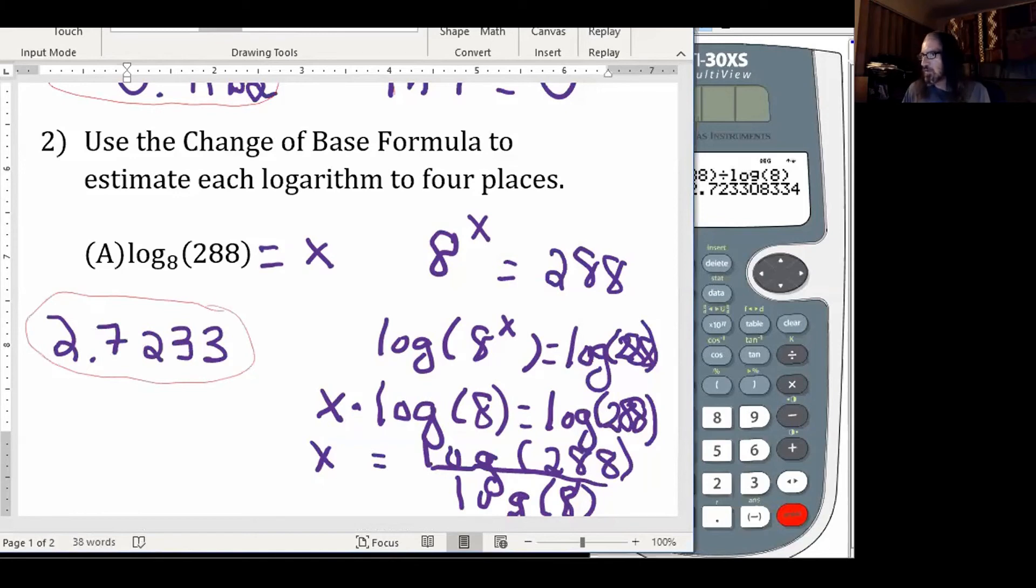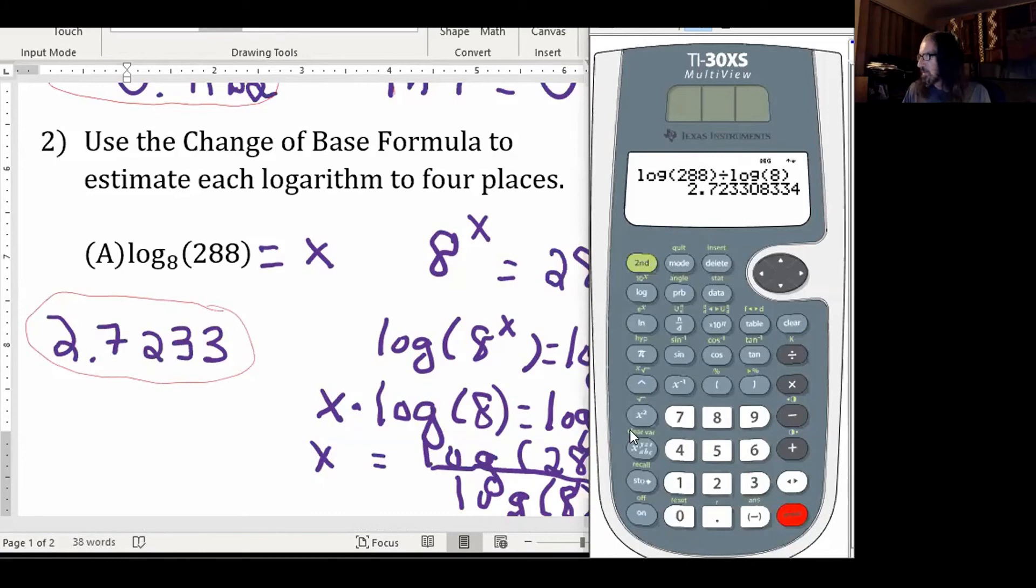If you would use the natural log instead, take the natural log of 288, divided by the natural log of 8. And I've cleared out what we had before, but at least when we round to 4 places, we are getting the same thing.